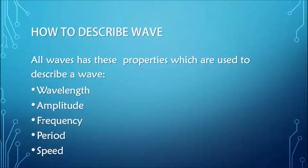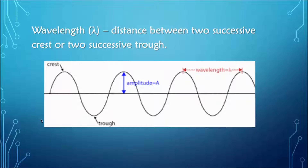All waves have properties which are used to describe them. These are: wavelength, amplitude, frequency, period, and speed. When we talk about a wave, we can describe it in terms of its wavelength, amplitude, frequency, period, or speed.